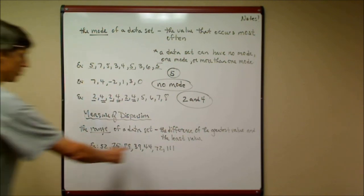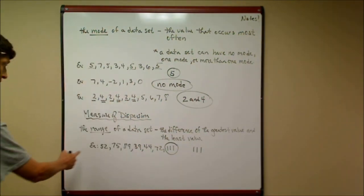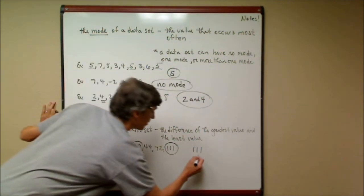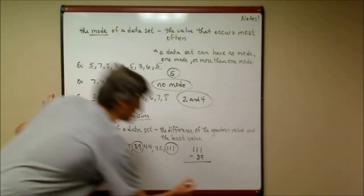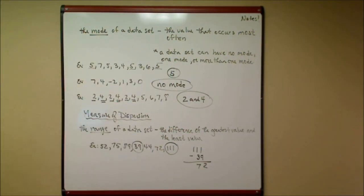So these are not in order, but I can see that this is my greatest value, and my least value appears to be, looks like 39. So if I take the difference of these, I have the range, and the difference is 72. That's my range.